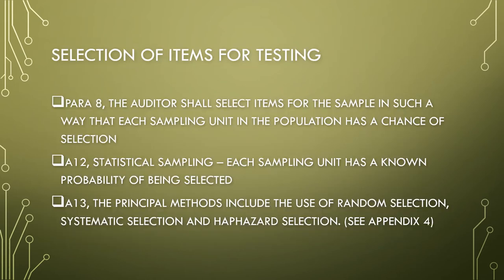Selection of items for testing: paragraph 8 states the auditor shall select items for the sample such that each sampling unit in the population has a chance of selection. Under A12 for statistical sampling, each sampling unit has a known probability of being selected. Under A13, the principal methods include random selection, systematic selection, and haphazard selection. See appendix 4.